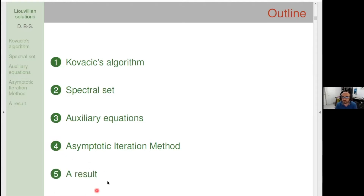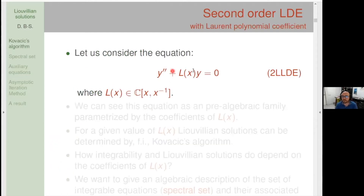We will see an iterative method to characterize the auxiliary equations that admit polynomial solutions, which is the key step in the Kovacic algorithm. With this, we are going to prove results about the family of integrable equations — the family of second-order linear differential equations, trace-free, with no term in the first derivative, where the coefficient is a Laurent polynomial in x and the inverse of x. Geometrically, this corresponds to a connection on the Riemann sphere with two singularities.